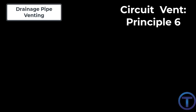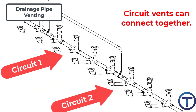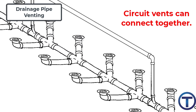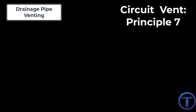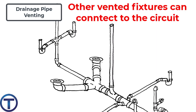Circuit vent principle six: circuit vents are allowed to be connected together. Every eight fixtures is considered a circuit, and they can continue in one line with multiple circuit vents. Circuit vent principle seven: fixtures other than the circuit vented fixtures are allowed to connect to the circuit, provided that they are either individually or commonly vented. This is also different from wet venting, which is very exclusive to bathroom group fixtures.